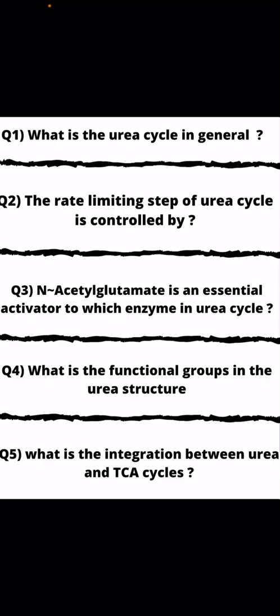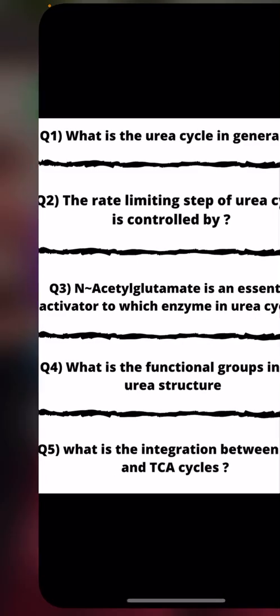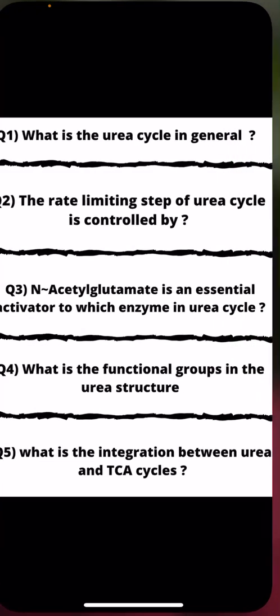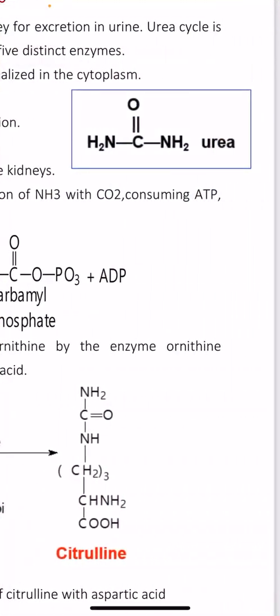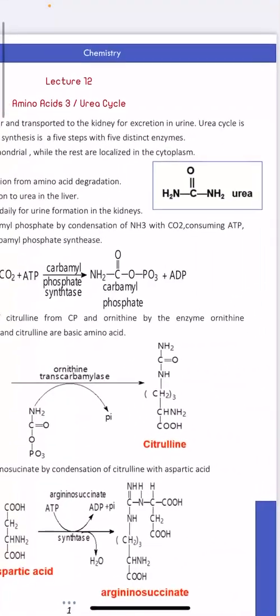أيضاً دورة TCA تنتج CO₂، وهذا الـ CO₂ يمكن أن يدخل إلى دورة اليوريا. هذا أهم ما يوجد في الجزء الأول.